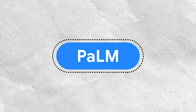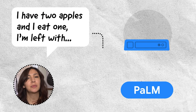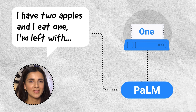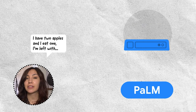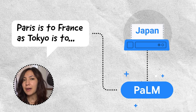For example, let's take Google's PaLM LLM and input this sentence: 'I have two apples and I eat one. I'm left with…' The PaLM model outputs the answer 'one.' In this way, we get the LLM to perform some simple math. Or take another example: 'Paris is to France as Tokyo is to…' The PaLM model outputs 'Japan,' which tells us that the model can not only complete analogies, but it also has some world knowledge that it's learned from its training data.